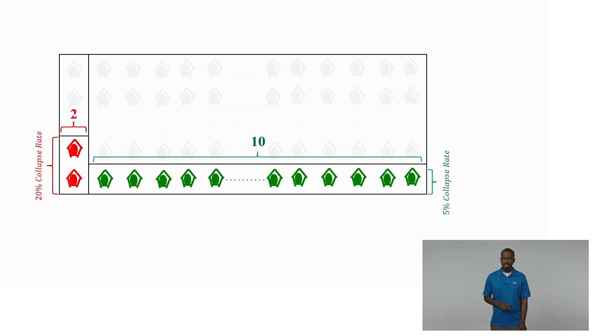With those collapse probability estimates, it means that we expect two of the pre-code buildings in our sample to collapse and ten of the code conforming buildings in our sample to collapse. So the probability that a random collapsed building from our sample is pre-code is 2 out of 12 or approximately 17%. And as it turns out, that is way lower than the 85% probability that was based on Halisi's initial reasoning.